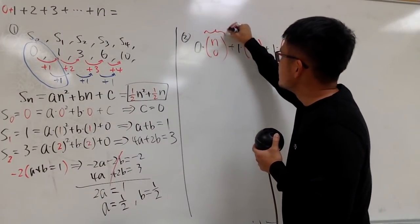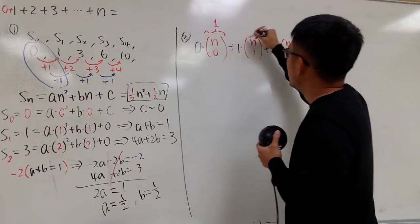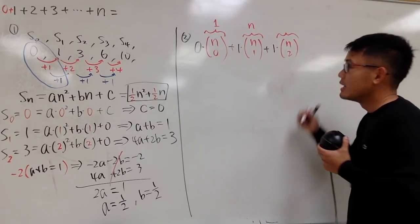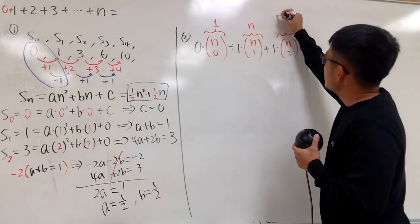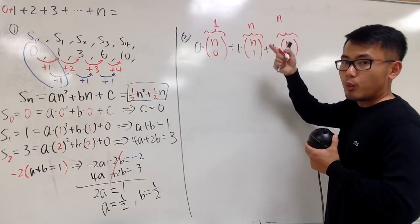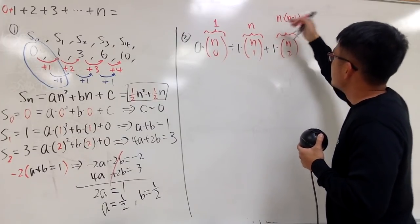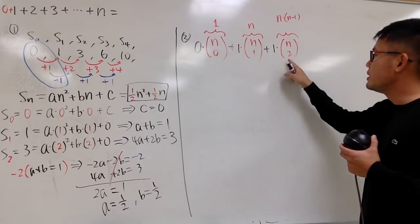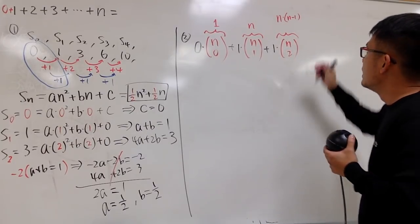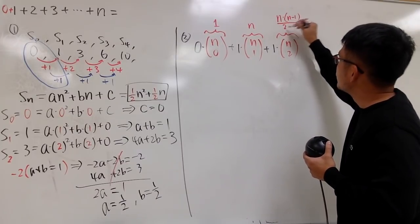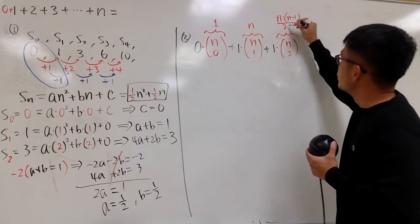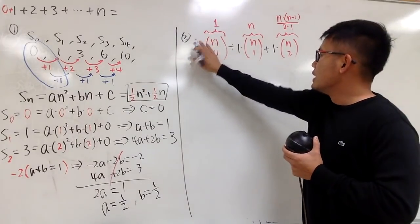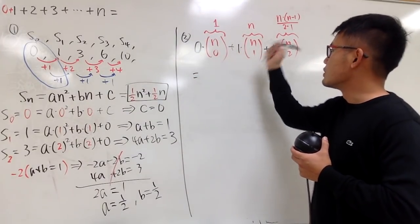Let me tell you what each term is. n choose 0 by definition equals 1. n choose 1 is just n. n choose 2: you start with n, go down by 1 to n minus 1 — these two terms are enough since we have 2 — and then divide by 2 factorial, which is 2 times 1. And 0 times 1 is just 0.